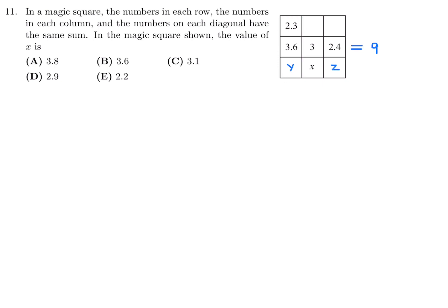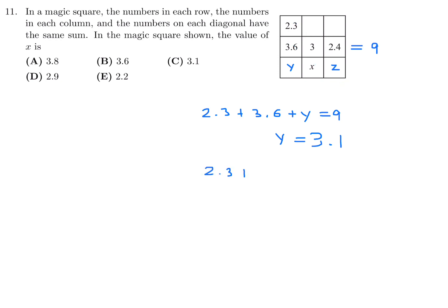So 2.3 plus 3.6 plus Y equals 9, solving for that gives Y equals 3.1. Then using the diagonal: 2.3 plus 3 plus Z equals 9, so Z equals 3.7. Now we're ready to find X: 3.1 plus X plus 3.7 equals 9, so X equals 2.2. Therefore number 11, the answer is E.